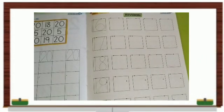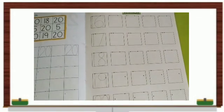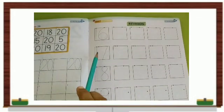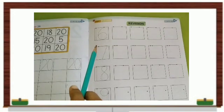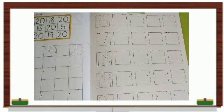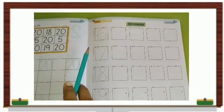So children, now we know the numbers up to 20, right? So let us revise numbers from 16, 17, 18, 19, 20. So first we will trace over these numbers.